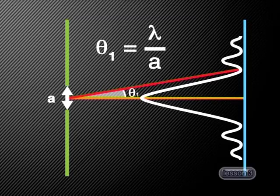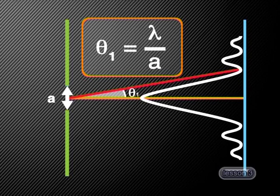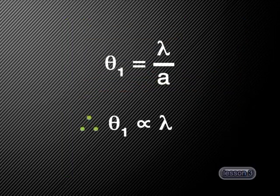Let's look at the reason for this. When we calculate the angle that the first dark fringe makes with the horizontal line, you will recall that the equation we use is theta₁ equals lambda divided by a. This equation shows that the angle is proportional to the wavelength. So the smaller the wavelength, the smaller the angle to the first dark fringe of the pattern.